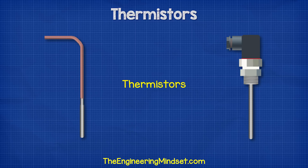Thermistors have a few variations in design, but these two are fairly common: the flexible version and the more rugged fixed version. A thermistor is just a thermal resistor, meaning it's an electrical resistor which changes resistance with temperature.